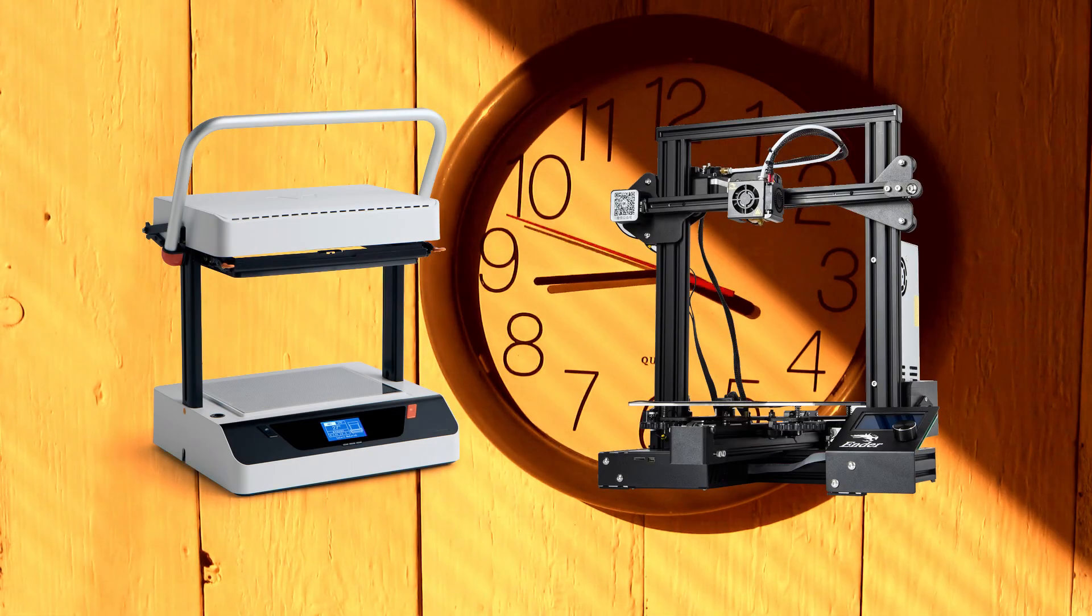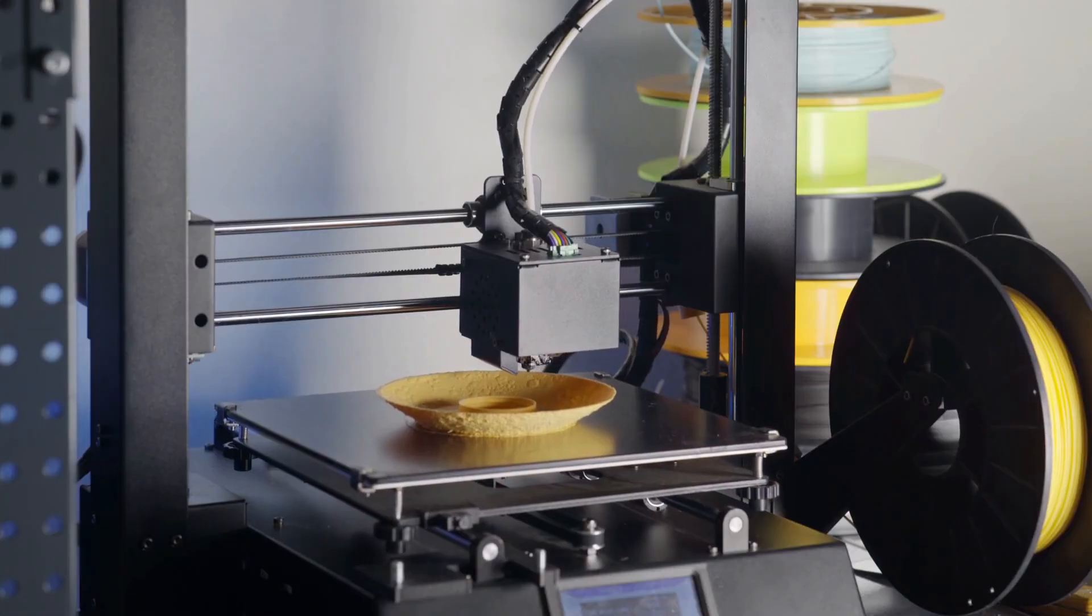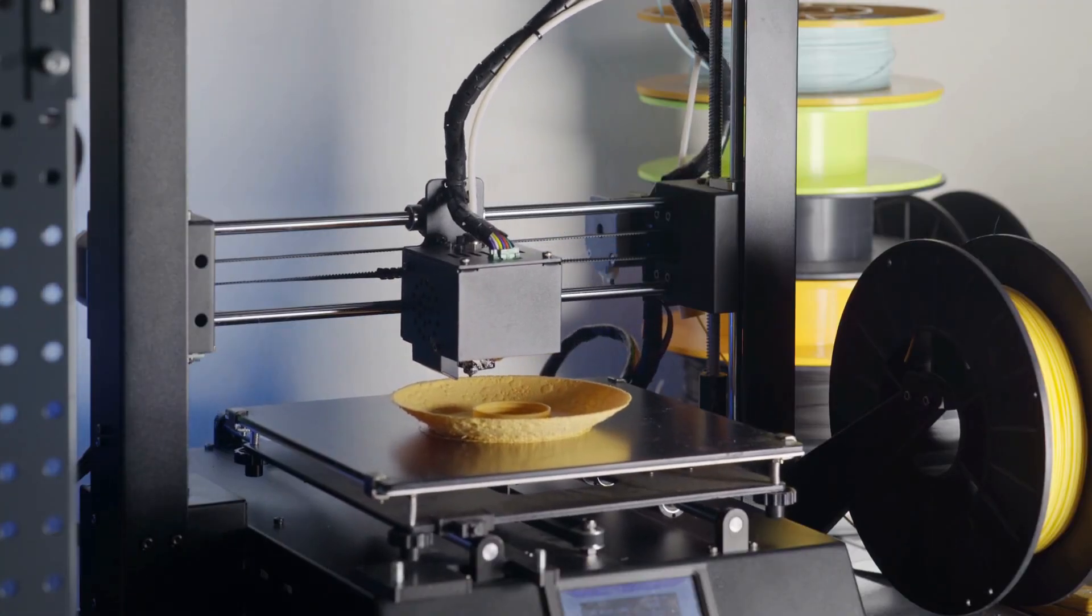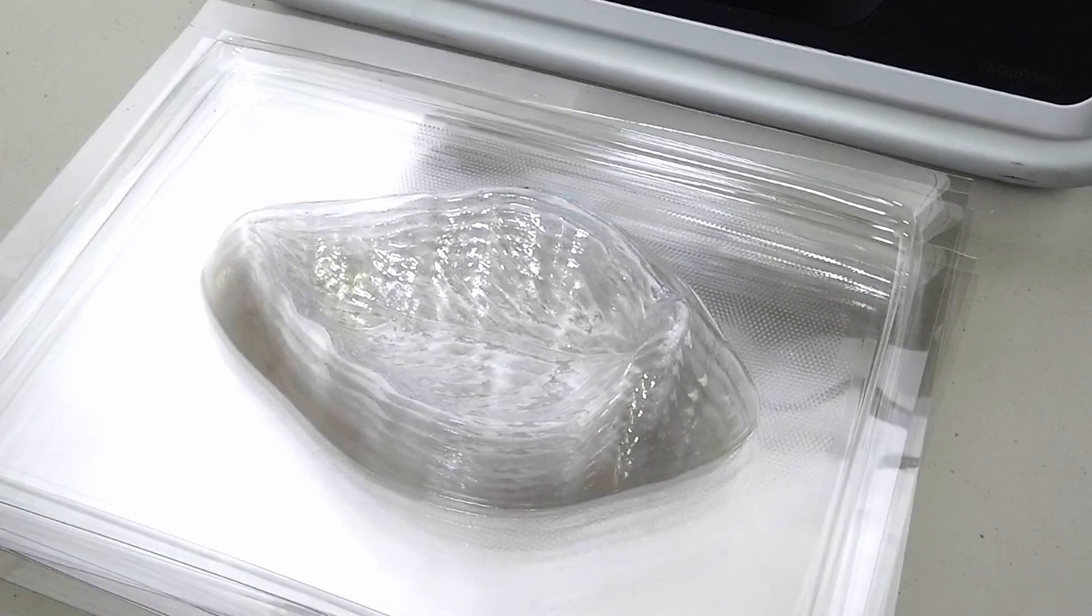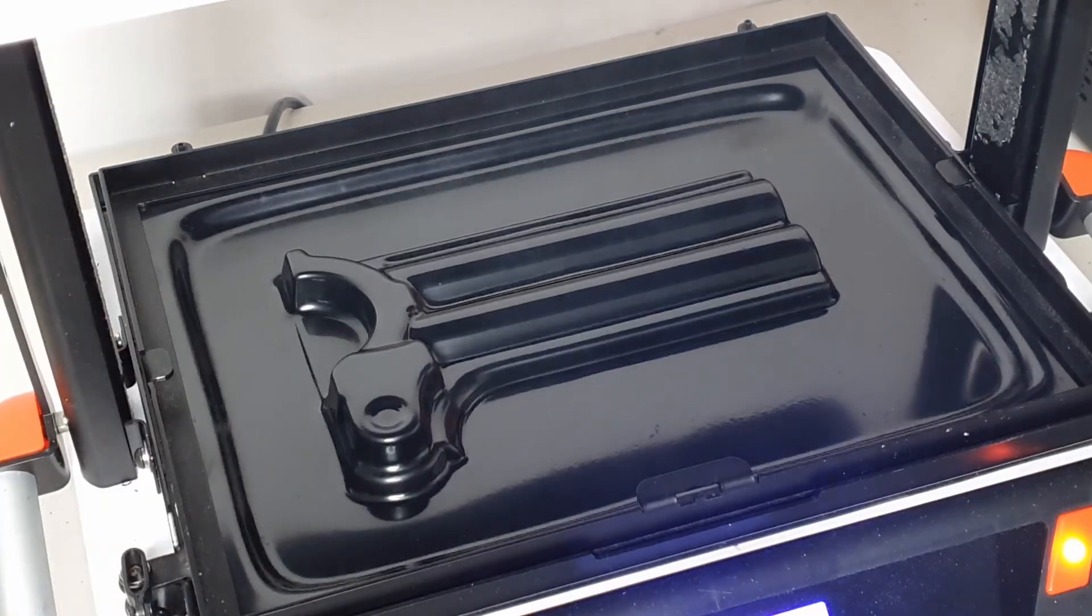One big advantage of Vacuform over 3D printing is time. It has a much quicker turnaround time. Where 3D printing may take hours to produce a copy of a 3D model, Vacuform can give you multiple in several minutes. So using Vacuform can cut production time drastically.